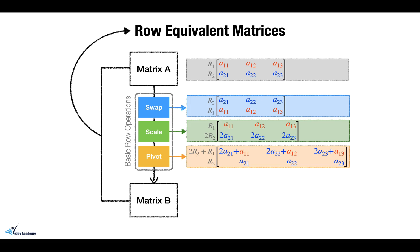Here the first row is replaced by the first row plus two times the second row, and the second row remained unchanged.